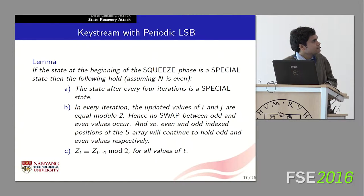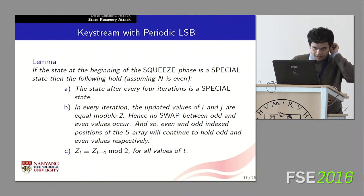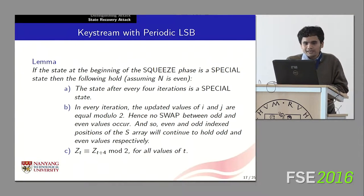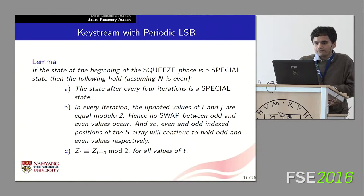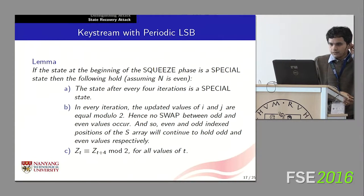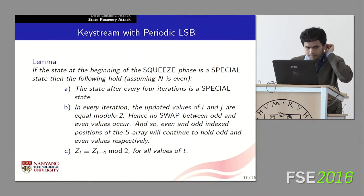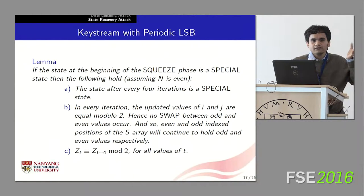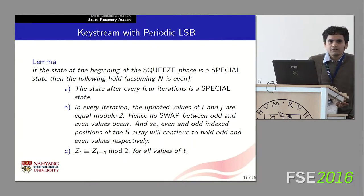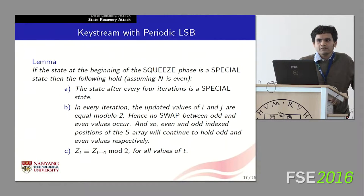We claim that if the state going into the squeeze phase is special, then the state after every fourth iteration will also be special. When this happens, the values of indices I and J have the same parity — they are either both even or both odd — so there is no shuffling between even and odd indices. Consequently, even indices of the array continue to take odd values, and odd indices continue to take even values.